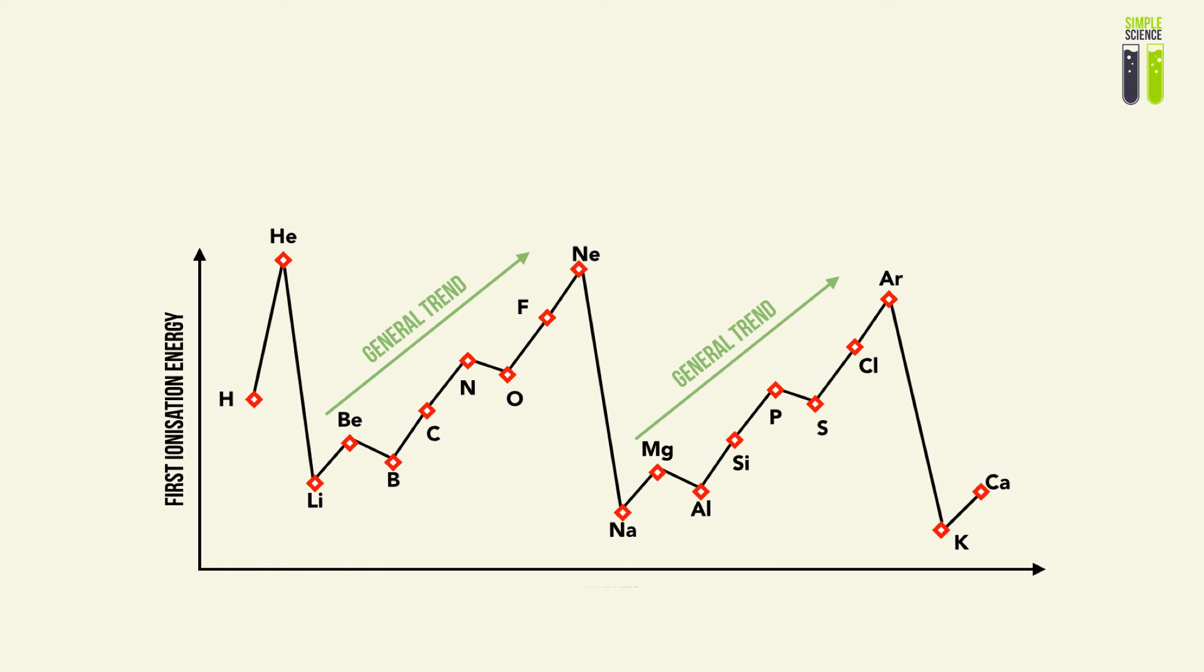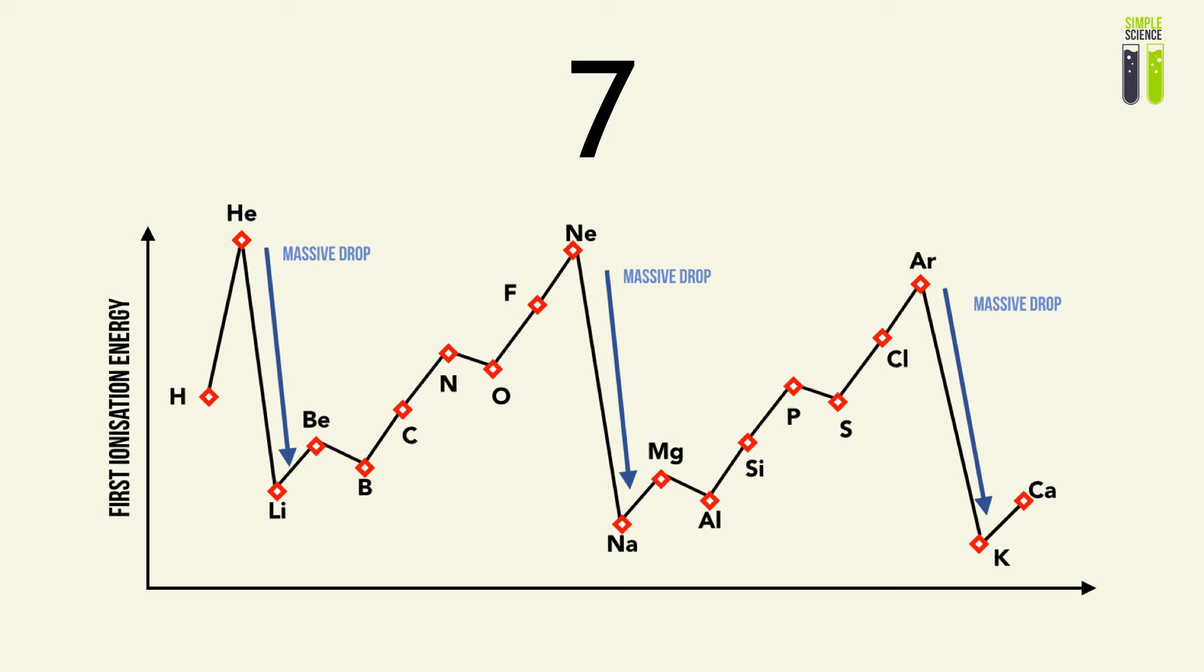This general trend will extend across periods and across proton numbers, and you must be able to explain the massive drops when you go down the period.